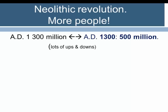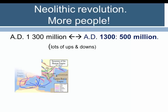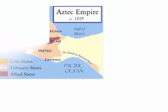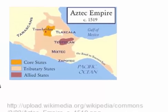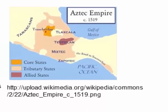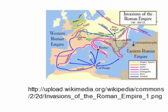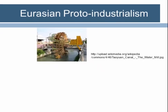From there the population oscillated up and down over the coming centuries, and by AD 1300 the global population was 500 million people — half a billion. This period is marked by the rise and fall of classic agrarian empires, such as the Aztec Empire in Mesoamerica or the Roman Empire around the Mediterranean.